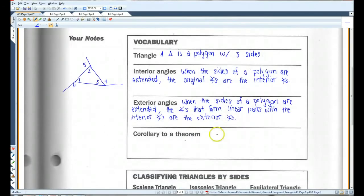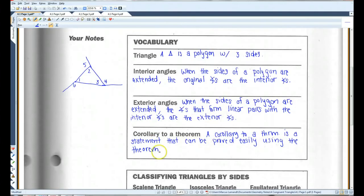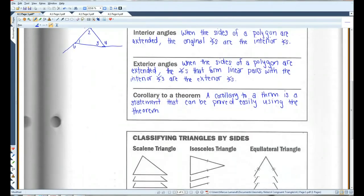All right, a corollary. A corollary to a theorem is a statement that can be proved easily using the theorem. Generally, a corollary is an extension of a particular theorem or a special case of a certain theorem.